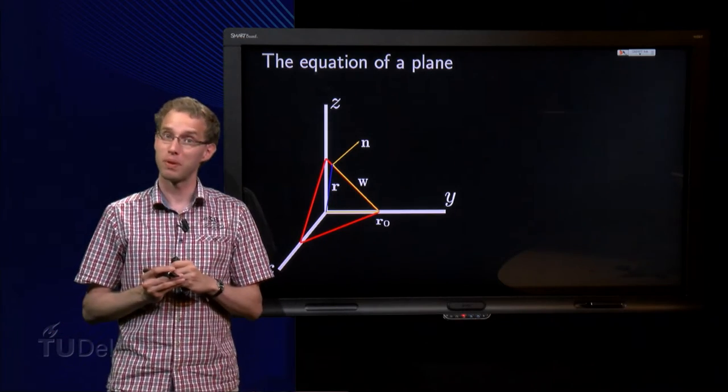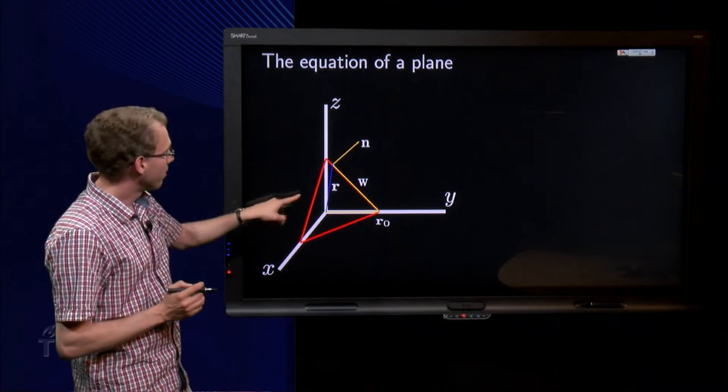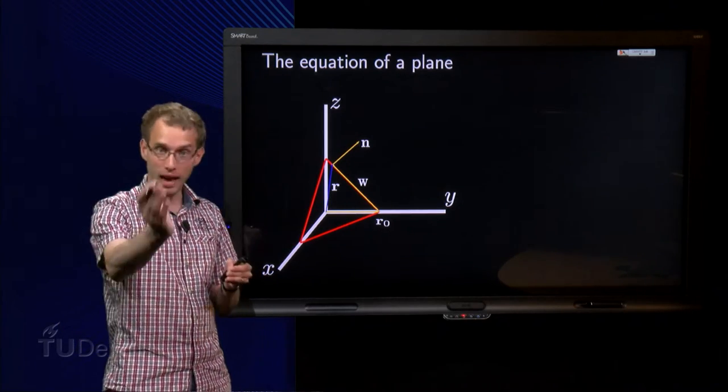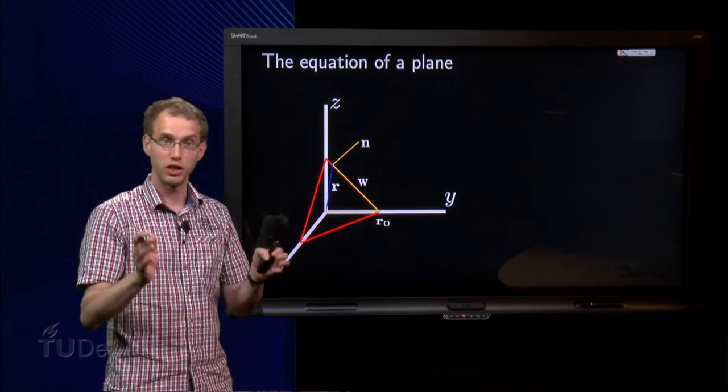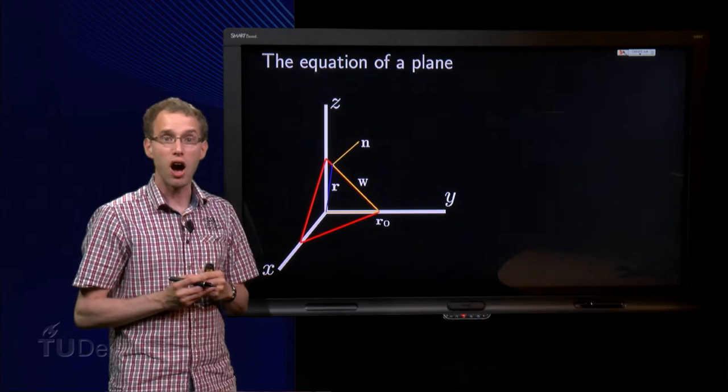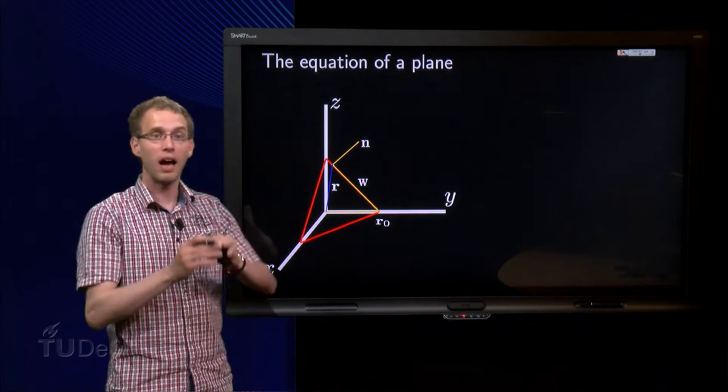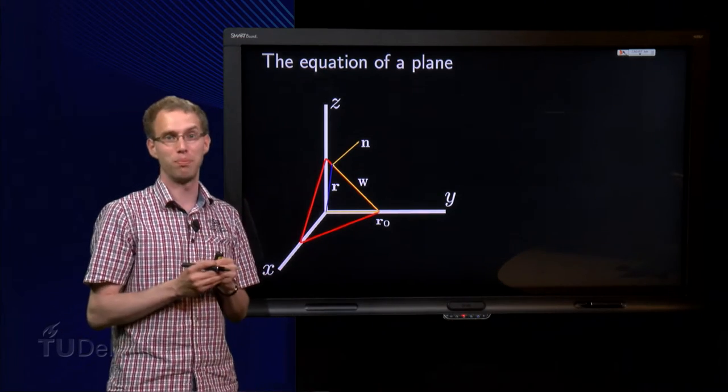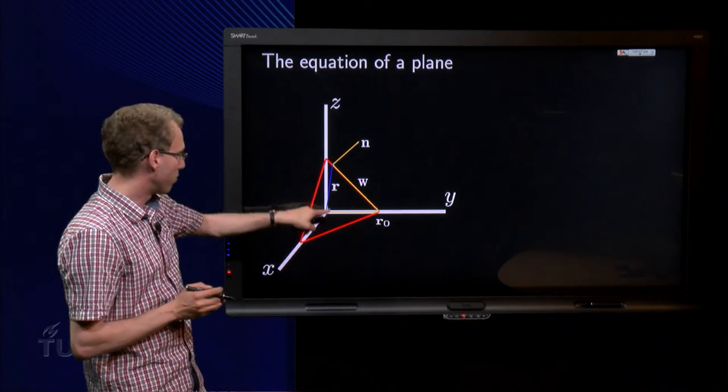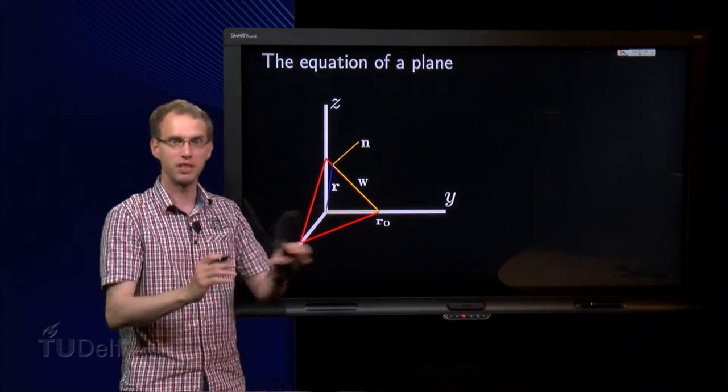Here we have a picture of our plane. We have a vector r0, which goes from the origin to any point in the plane. r0 is given. The blue vector r is going from the origin to any point, to an arbitrary point in the plane, drawn over here, but could also be drawn over there, over there, to any point in the plane.